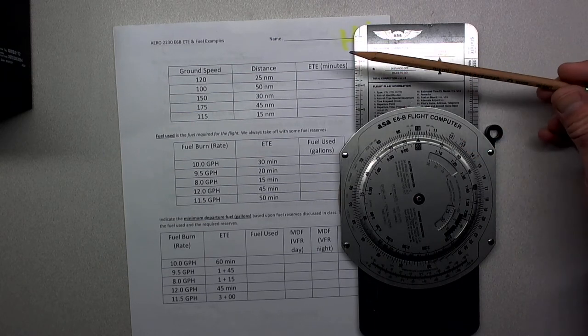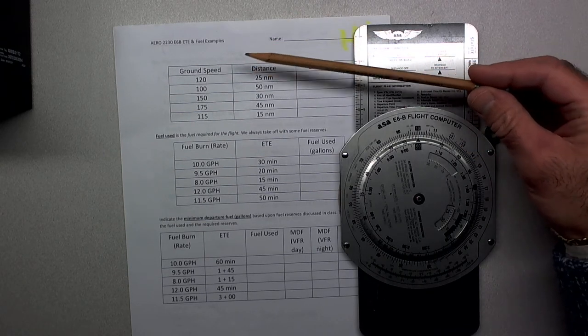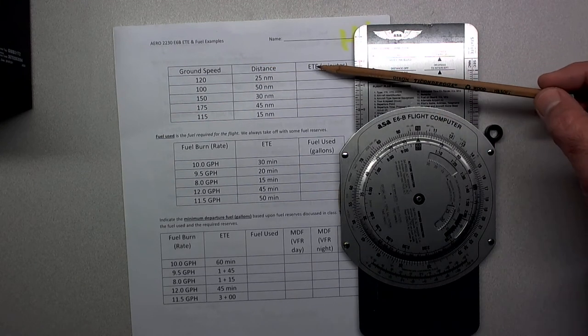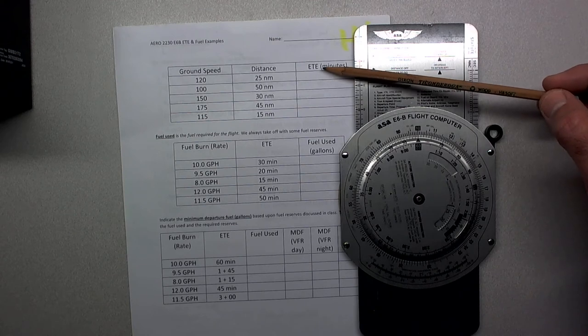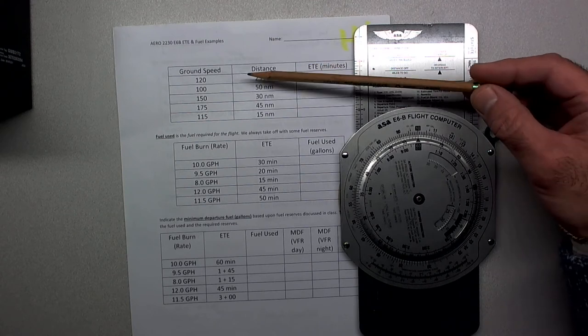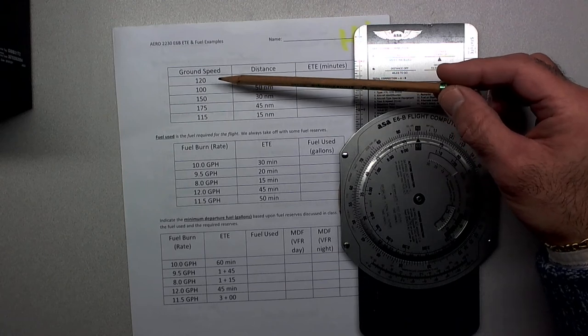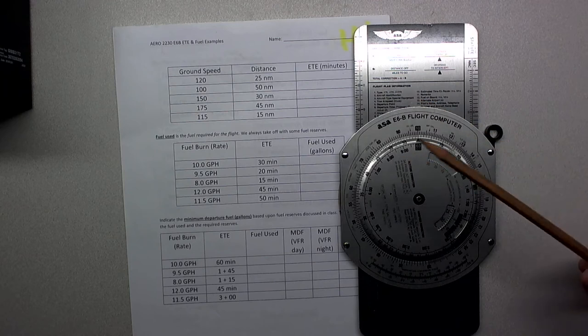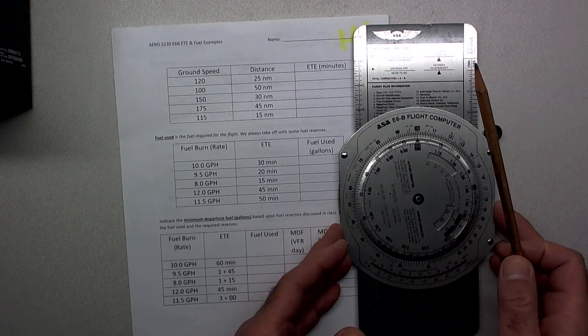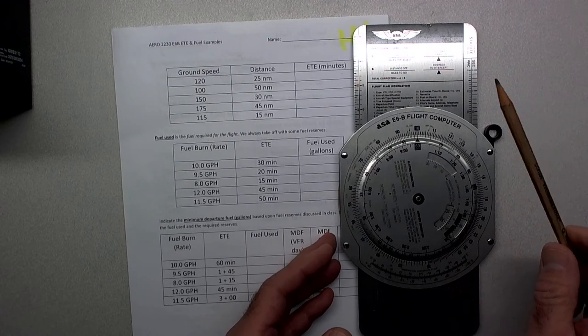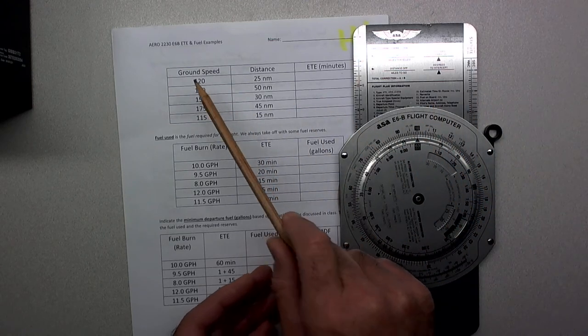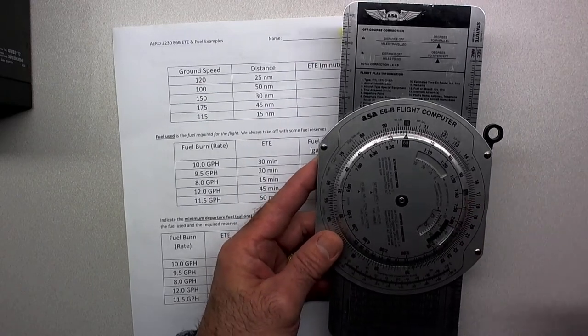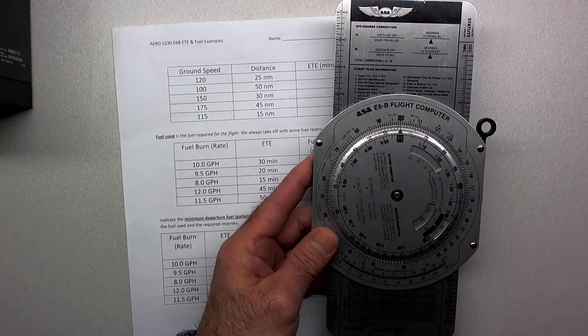Let's take a look at this first problem. They give us a ground speed of 120 knots and a distance of 25 nautical miles, and they're asking us to calculate the estimated time en route. Now we need to calculate ground speed using the other side of the E6B computer, but that's in another video. Let's just start with 120 knots. 120 knots for ground speed means that we will travel 120 nautical miles in 60 minutes.